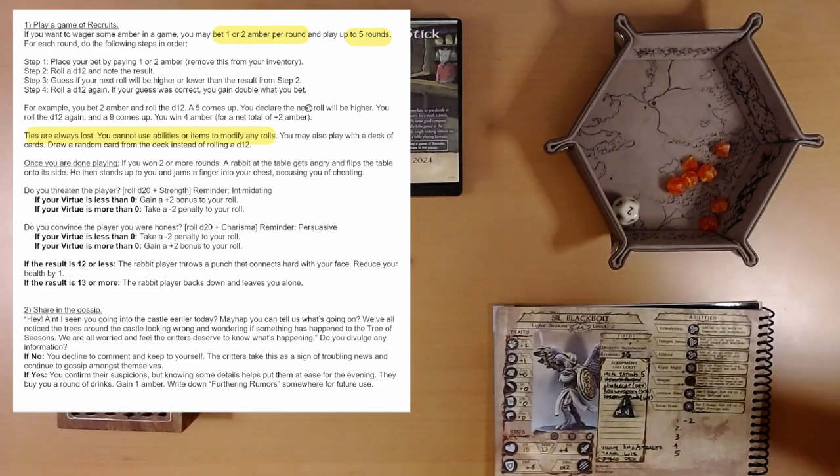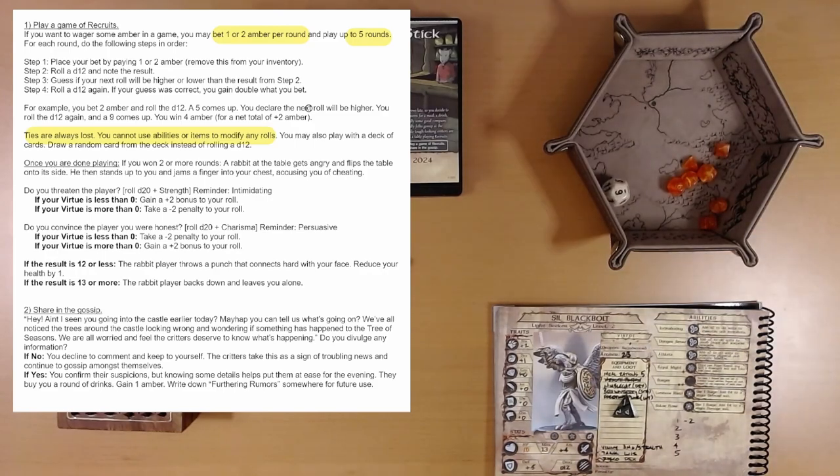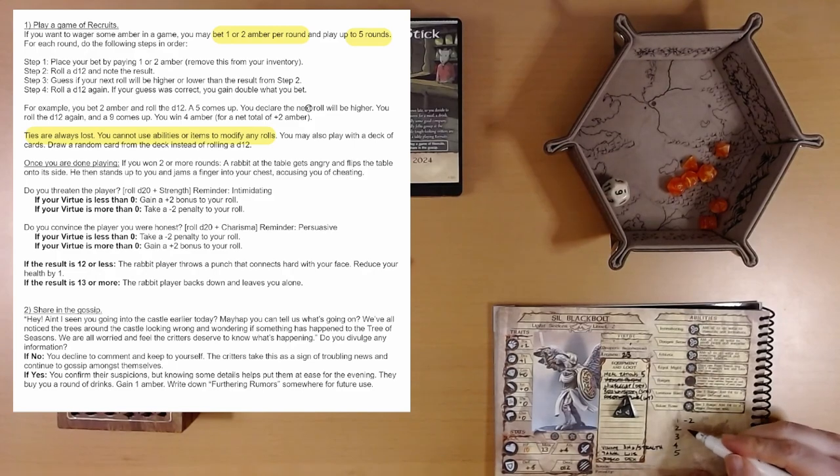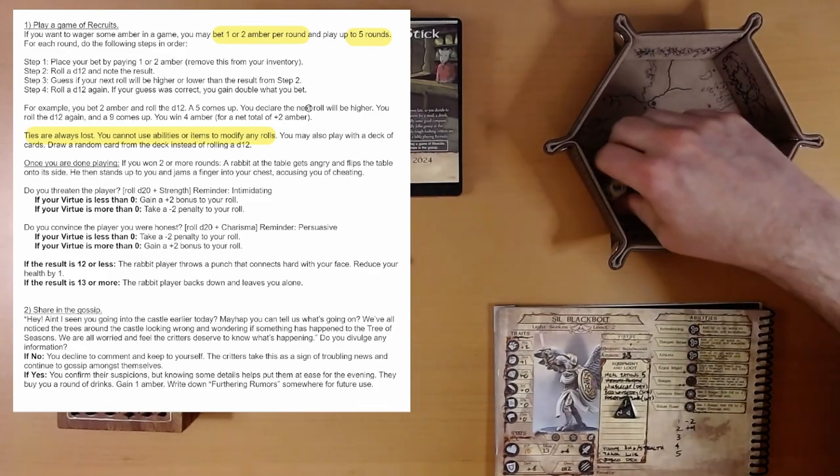Vinny is undaunted. He rolls a two. This next one's gonna be higher. Excellent. We're up. We win double what we bet, right? Well, it'd be 12. Well, it'd be, if your guess is correct, you gain double what you bet. Yeah. Okay.